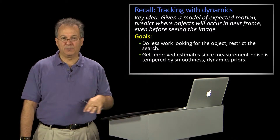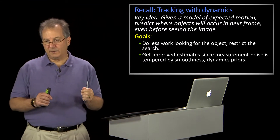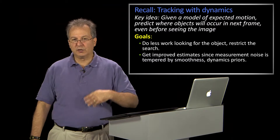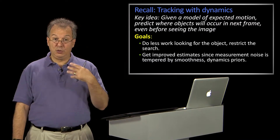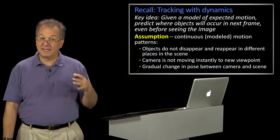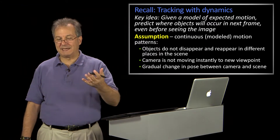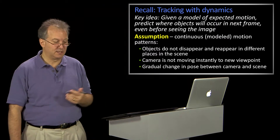So you remember tracking with dynamics — the whole idea was, because we're tracking something that's moving with respect to the imagery, we're going to learn something about the dynamics and use the dynamics in order to make predictions. We're doing this so that we can limit the area of search and get a better total estimate, under the assumption that the things we're trying to track can't be perfectly detected and it's noisy to begin with. We're basically assuming there's some sort of smooth motion going on and that our dynamics don't surprise us.